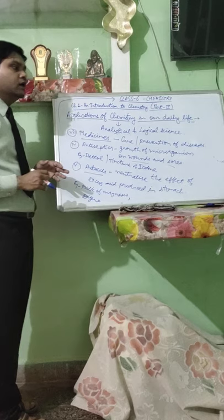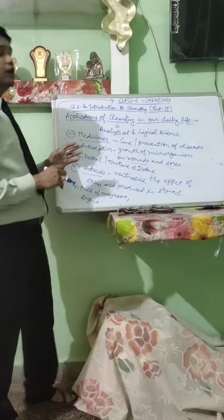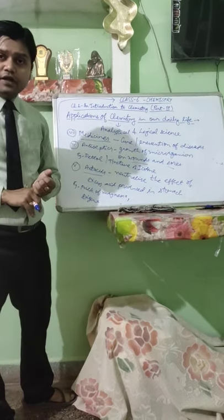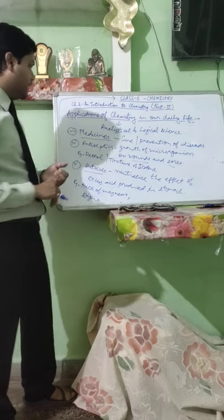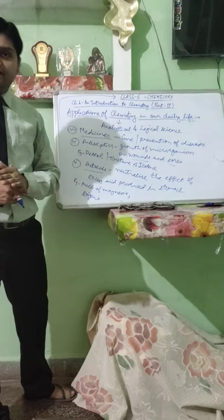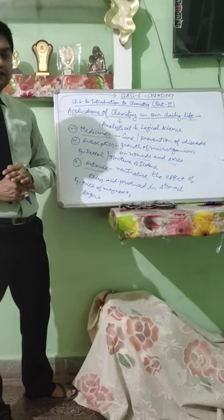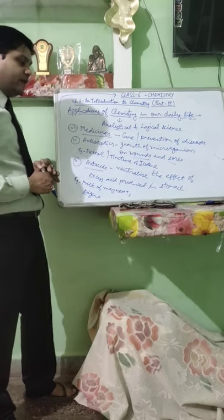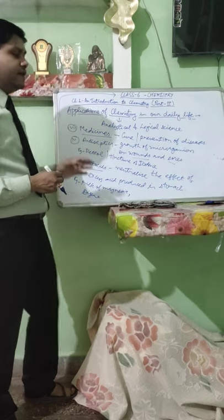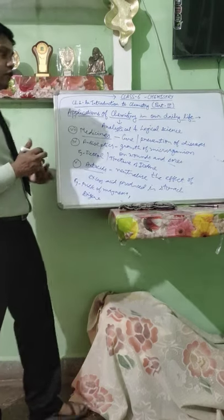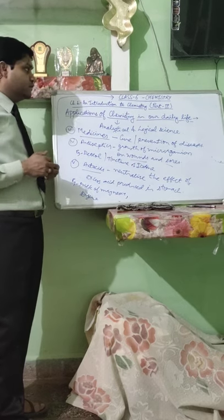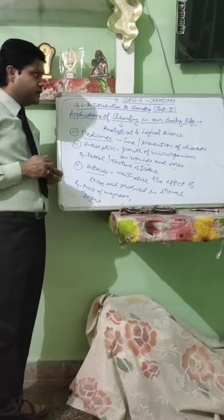You have to remember whatever we have taught today: the applications of chemistry, where chemistry is used in our daily life, how it is used, important types of fertilizers with examples, types of cosmetics with examples, and medicines with their types and examples. This was all for today's class. The next video will be presented soon. Thank you.